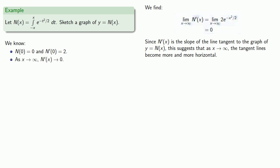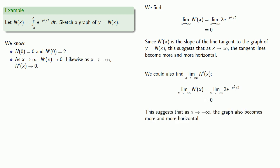We could also try to find the limit as x goes to minus infinity of the derivative. And since this is also 0, this suggests that as x goes to minus infinity, the graph also becomes more and more horizontal.